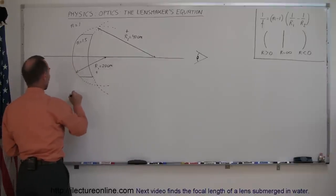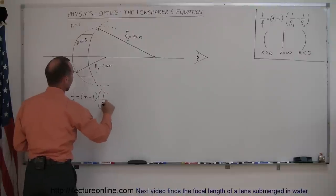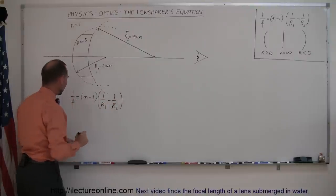Writing down the lensmaker's equation, we have 1 over f is equal to the index of refraction of the lens minus 1 times 1 over r1 minus 1 over r2. Plug in the numbers,